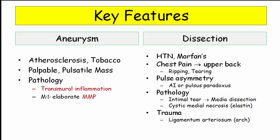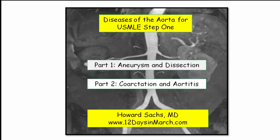Here is a summary of the key features reviewed in this video. Be familiar with risk factors, demographics, and clinical presentation. Be familiar with the pathology — especially noting inflammation and the macrophage elaboration of matrix metalloproteinases compared with the characteristic cystic medial necrosis lesion of dissection. That concludes this discussion of aneurysm and dissection. In part two, we'll undertake a functional approach to coarctation with a brief review of aortitis. If you have any questions, please email me at 12 Days in March.